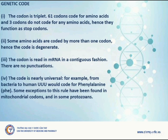Genetic Code. The codon is a triplet. 61 codons code for amino acids and 3 codons do not code for any amino acid; hence, they function as stop codons. Some amino acids are coded by more than one codon; hence, the code is degenerate. The codon is read in mRNA in a contiguous fashion with no punctuations. The code is nearly universal.